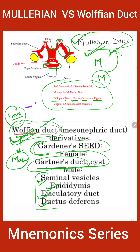So basically you need to remember: Mullerian duct is the duct of female and Wolffian duct is the duct of male. Thank you.